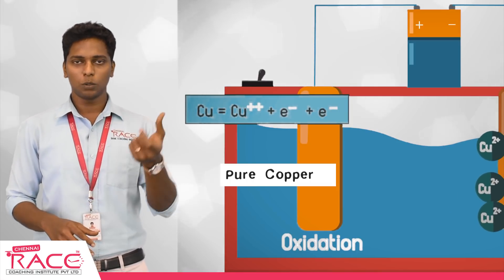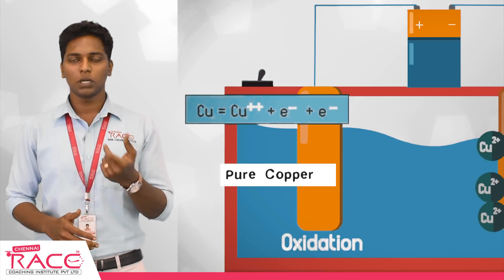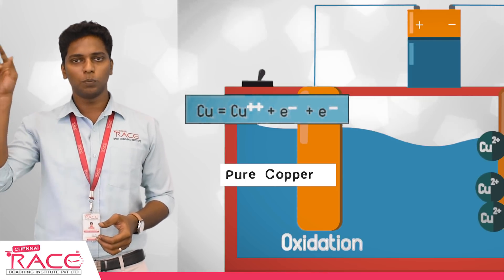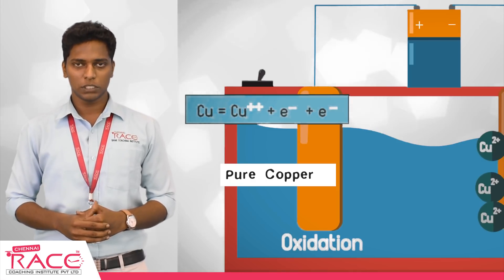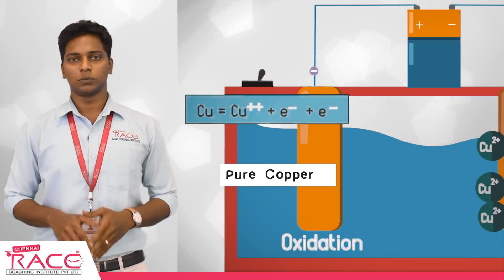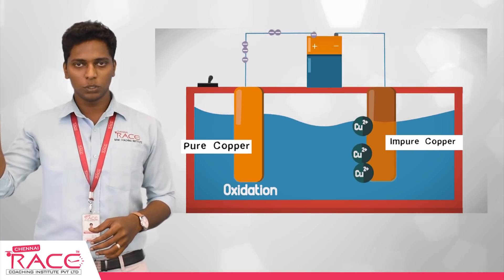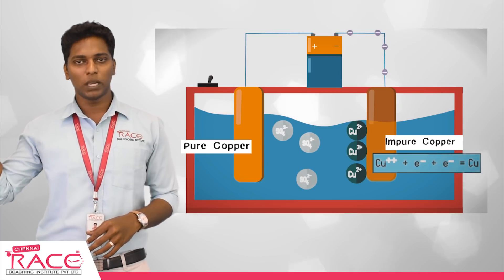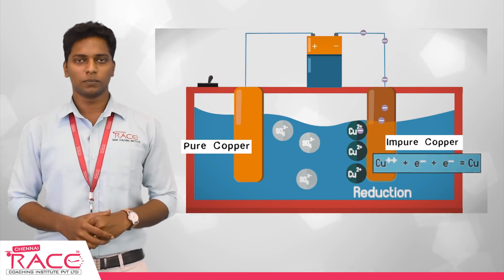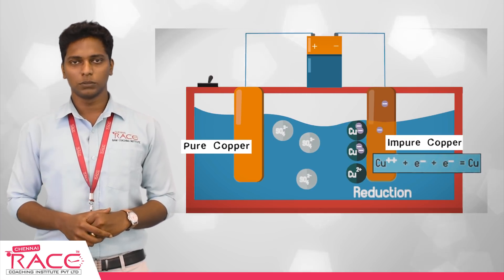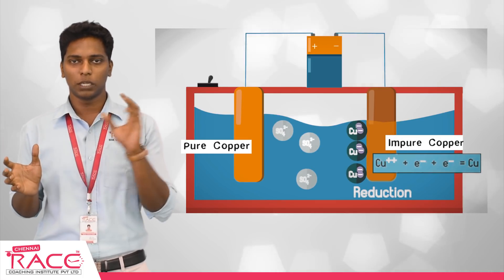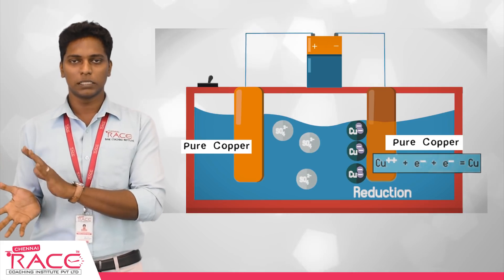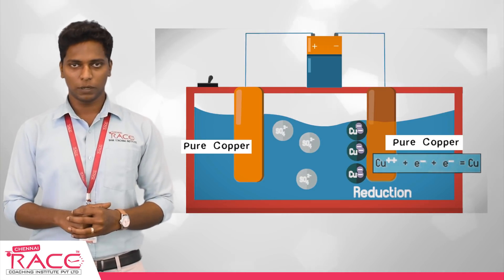At the anode side, the impure copper dissolves: Cu → Cu²⁺ + 2e⁻. At the cathode side, the copper ions are deposited: Cu²⁺ + 2e⁻ → Cu. This deposits pure copper at the cathode. We need pure copper ions to keep building up the pure copper deposit. This is the electro refining method.